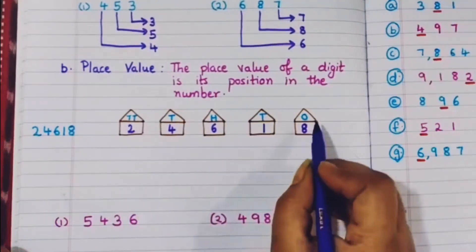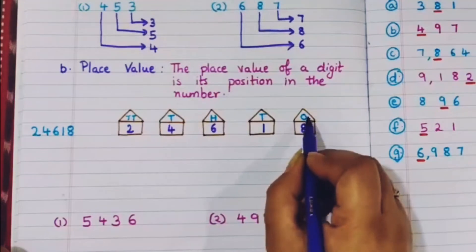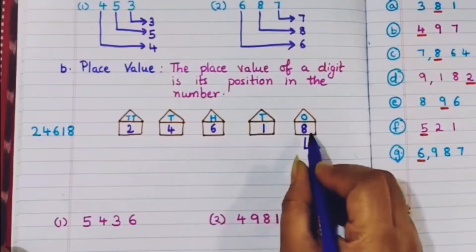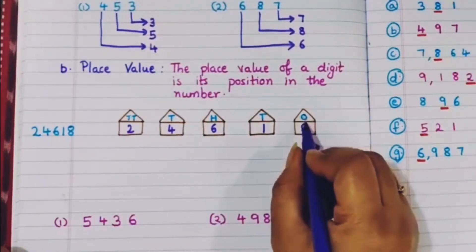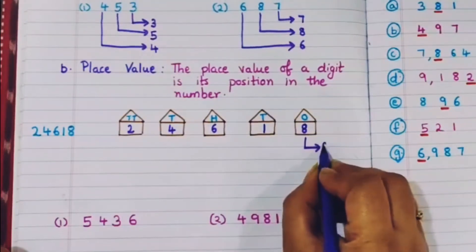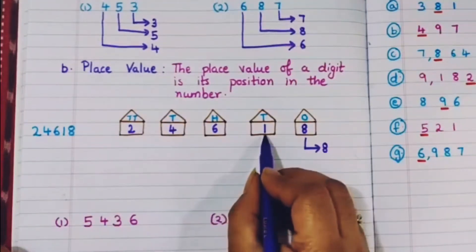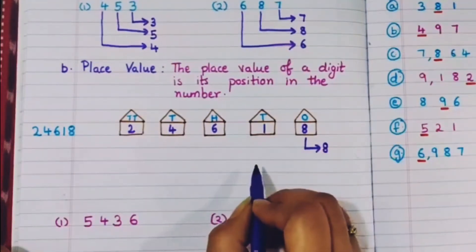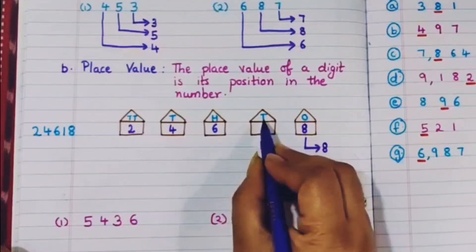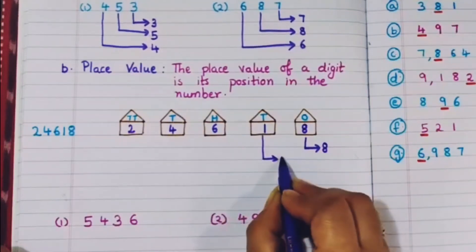Now let's write the place values. 8 is present in the 1's house, so the place value of 8 is 8 itself. 1 is sitting in the 10's house, so the place value of 1 is 10 — one 10 is 10.